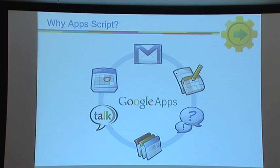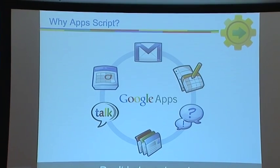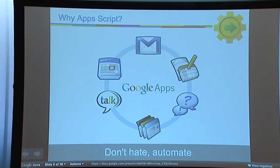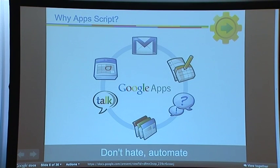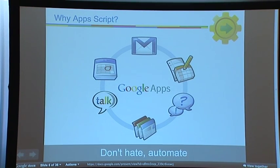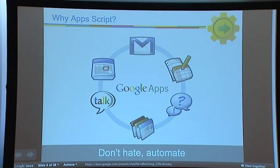Why did we build Apps Script? The base idea is 'don't hate, automate.' Some of you have probably felt frustrated by super repetitive tasks — like having to send 500 emails and customize them with customer names. That's a really boring task you could automate with Apps Script. You might also feel frustrated by missing features in Gmail. Using Apps Script, you can create that feature yourself and automate it. The base point is: don't hate your life, just automate it.